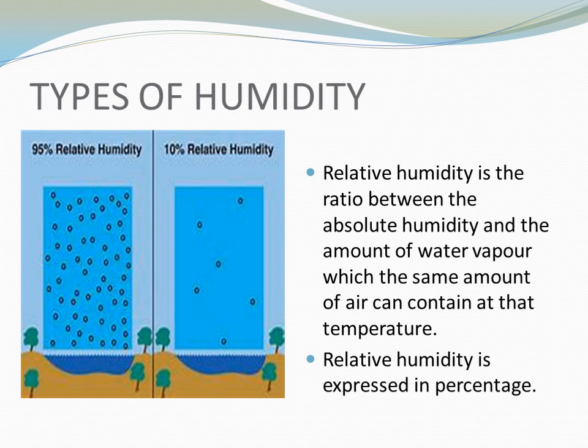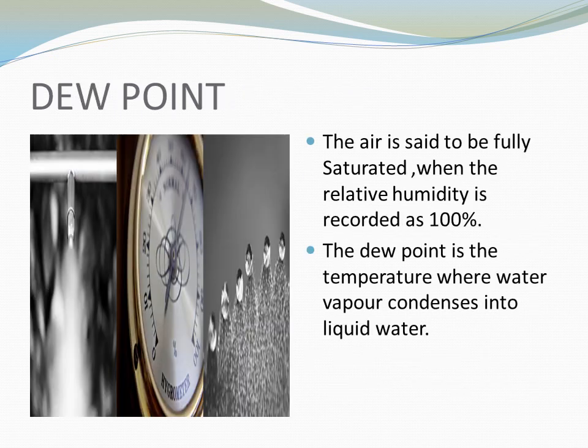The second type of humidity is relative humidity. Relative humidity is the ratio between the absolute humidity and the amount of water vapor which the same amount of air can contain at that temperature. Relative humidity is expressed in percentage. The air is said to be fully saturated when the relative humidity is recorded as 100%. The dew point is the temperature where water vapor condenses into liquid water.